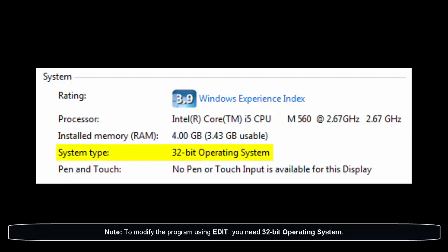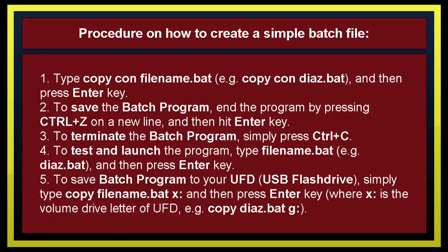Note: to modify the program using EDIT, you need a 32-bit operating system. But if you're using a 64-bit operating system, you can modify the source code using Notepad. Procedure on how to create a simple batch file: type copy space con space filename.bat and then press enter. To save the batch program, end it by pressing Ctrl+Z on a new line and then hit enter. To terminate the batch program, simply press Ctrl+Z. To test and launch the program, type filename.bat and then press enter. To save the batch program to your USB flash drive, simply type copy space filename.bat space and the drive letter of the USB flash drive, then press enter.